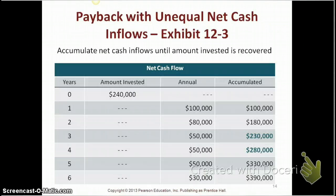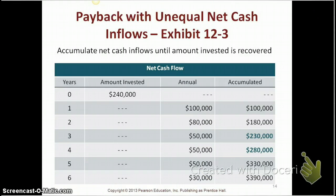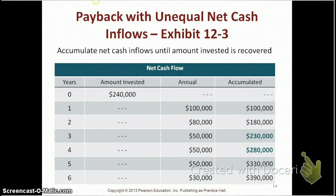In this example, we invest $240,000, and our net cash flows are $100,000 in the first year, $80,000 in the second year, $50,000 in the third year, and so on. When you have unequal cash flows, you have to accumulate them — add them up by each year — to see how long it will take to recover your initial investment.